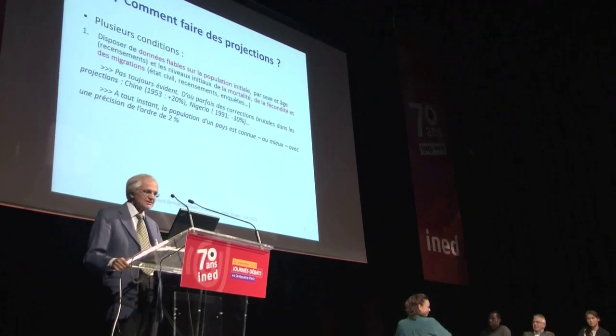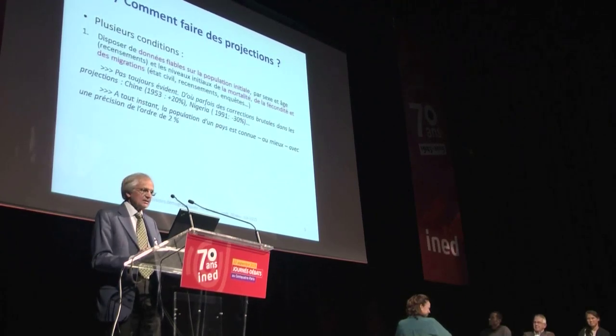We need a starting point to know where we are going, which is not always easy. Many countries do not have reliable data on their populations. There are examples of major adjustments, such as after the 1953 census in China — the United Nations corrected China's population by 20%. More recently, in Nigeria in 1991, a census led to a 30% decrease in the country's population. In fact, we never know the exact population of any country. We can estimate the French population to within 2%, but 2% is not small and can lead to errors when projecting into the future.